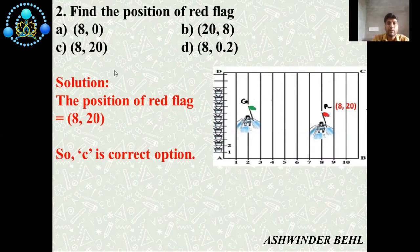Now we will solve the second question: find the position of the red flag. There are four options: (8, 0), (20, 8), (8, 20), (8, 0.2). This question is the same as the first one. The question is asking about the position of the red flag. If you see this picture, the x-axis is 8 and the y-axis is one fifth times 100, which gives us 20. So the position of the red flag is (8, 20). C is the correct option.